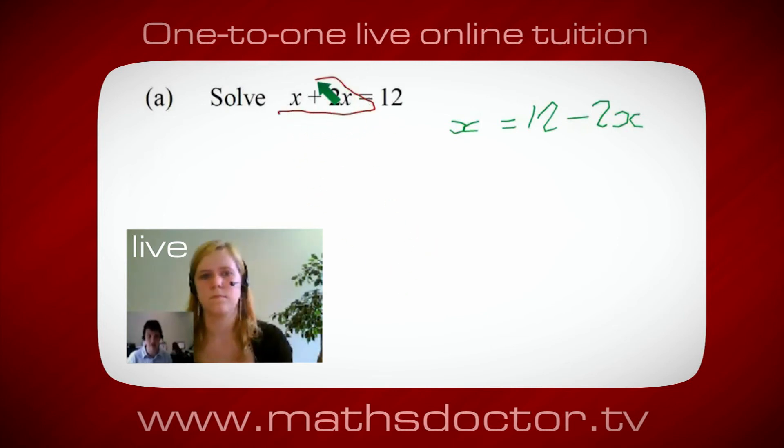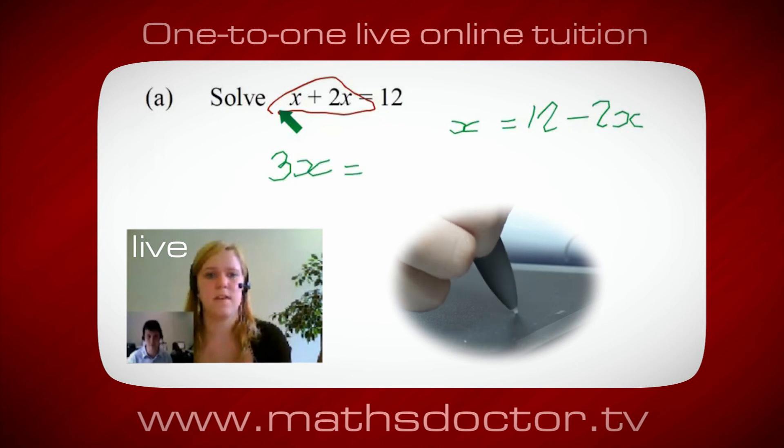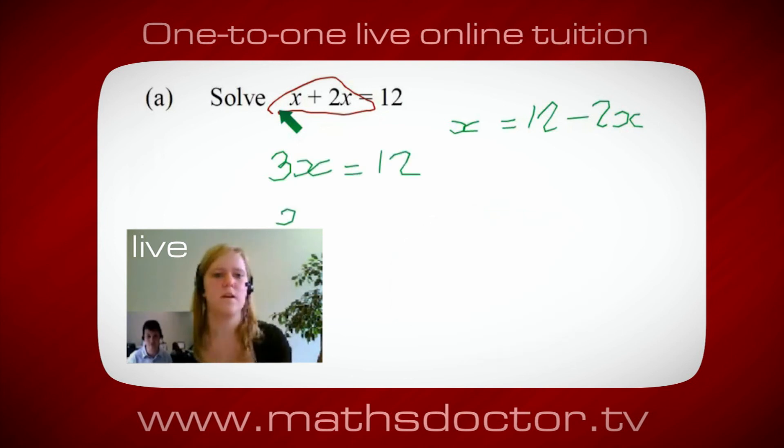Get all these together in one place. Oh okay, it's 3x isn't it? Yeah, absolutely. So 3x equals 12. Oh, and so x equals 4. Brilliant, spot on, well done.